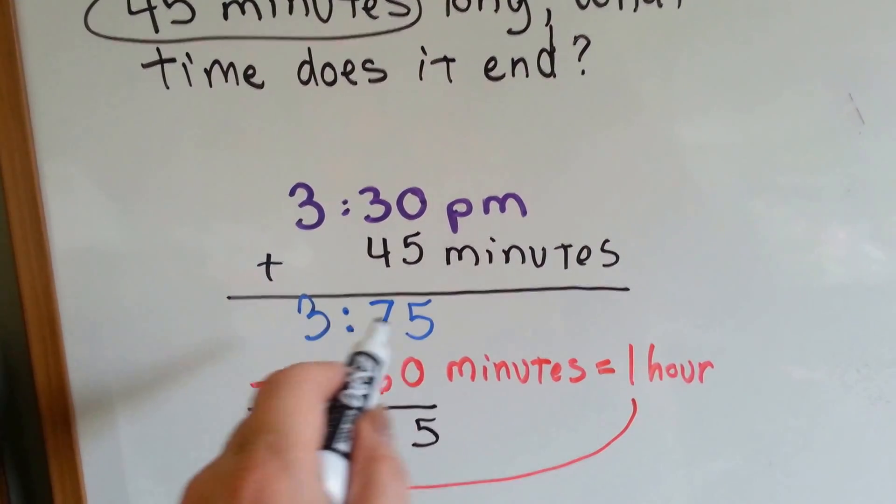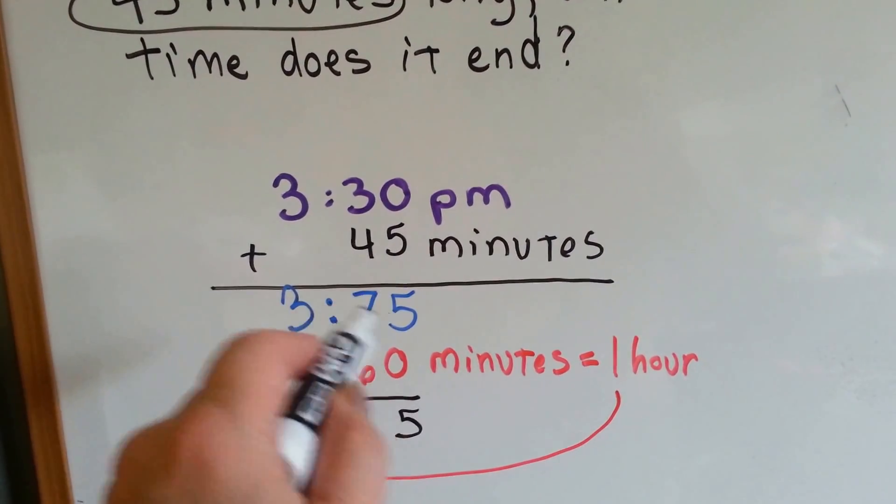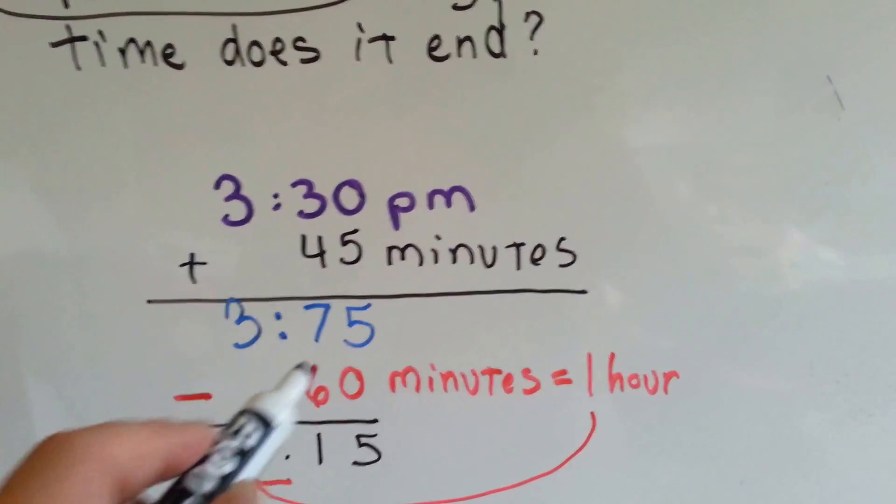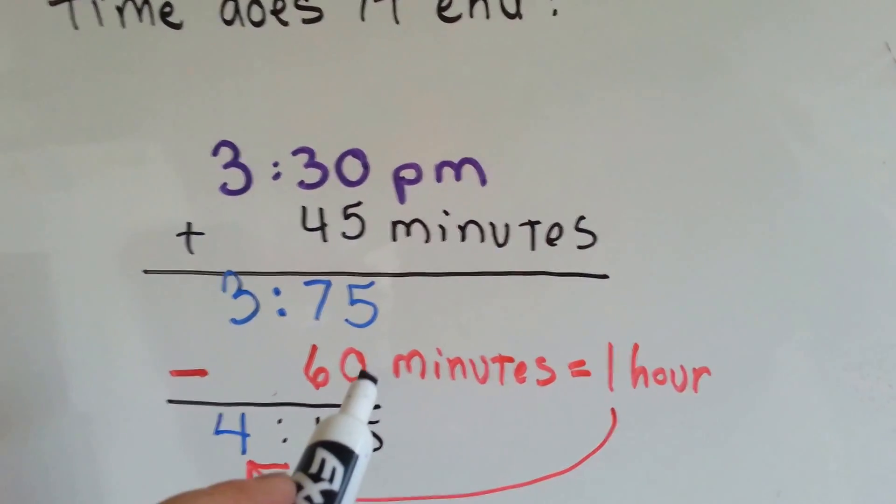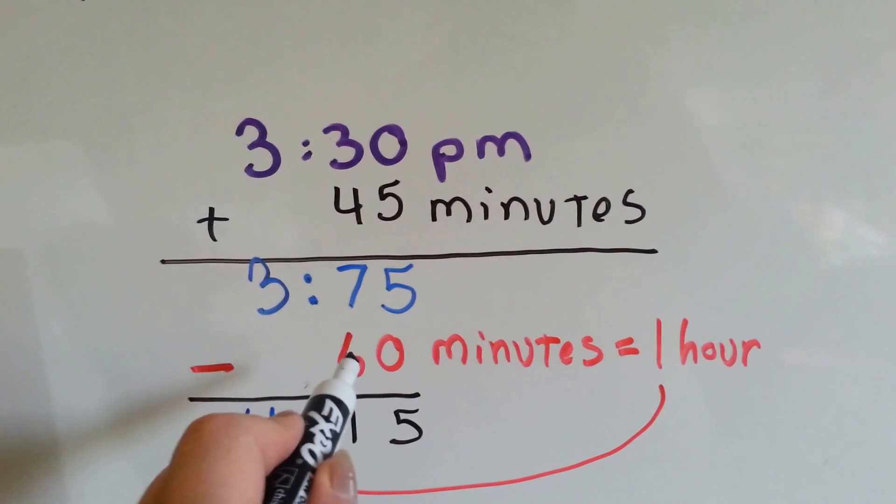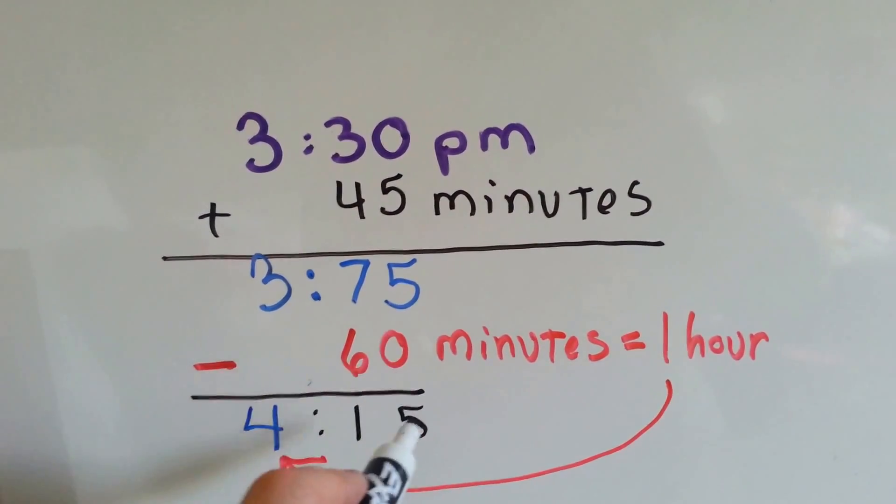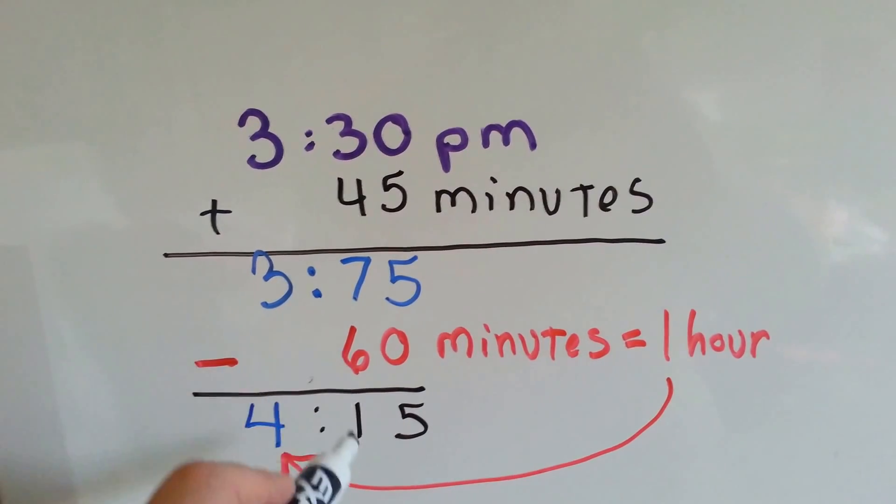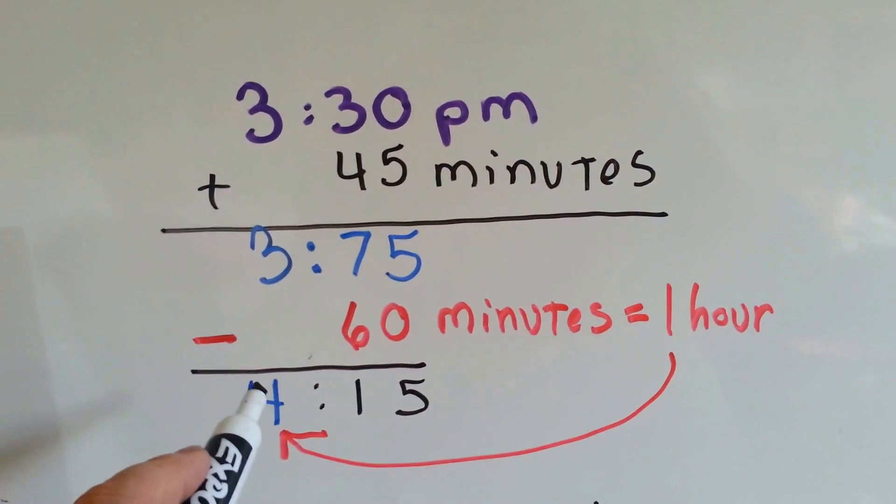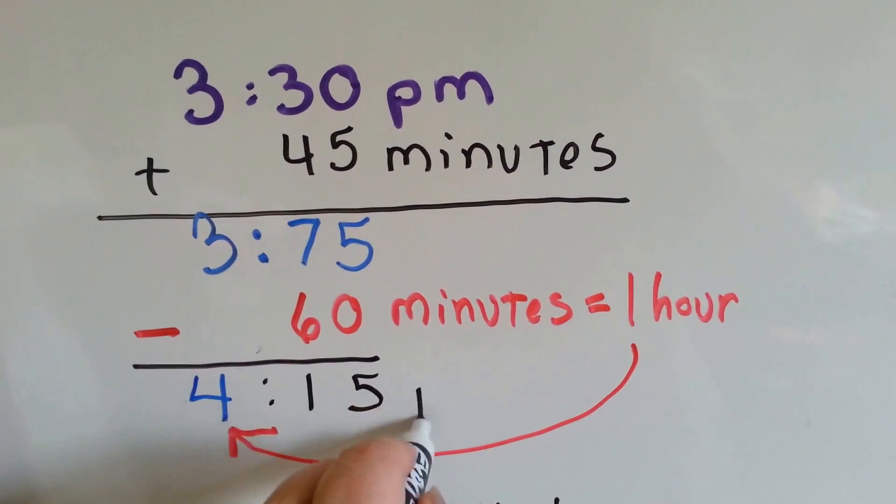Now, there's no such thing as 3:75 PM. There's only 60 minutes on a clock. You can't do that. So what we need to do is we need to regroup the hour. We take 60 minutes of an hour and we subtract it from the 75. 5 take away 0 is 5, 7 take away 6 is 1, and we regroup that one hour to the hour side. So it ends up being 4:15 PM.